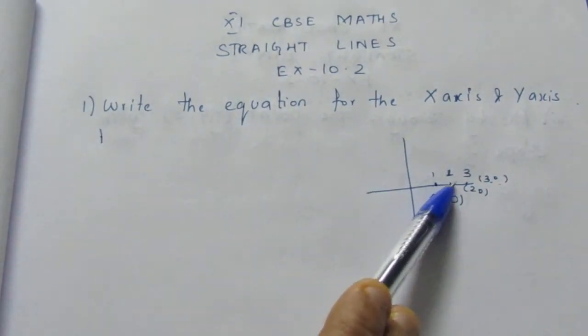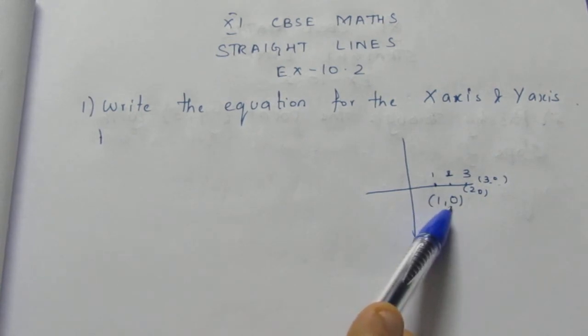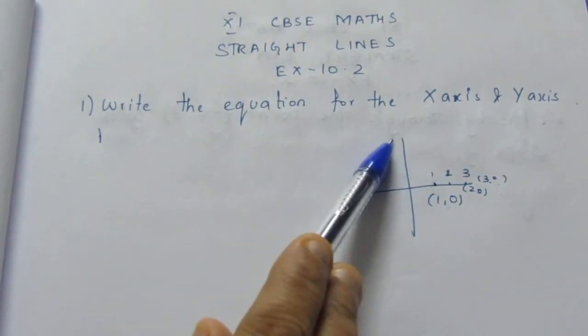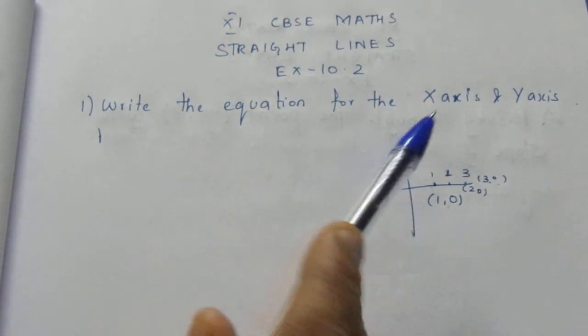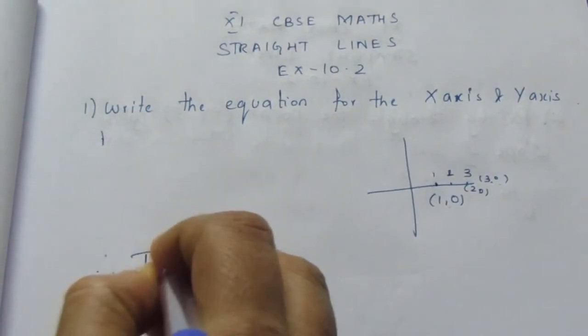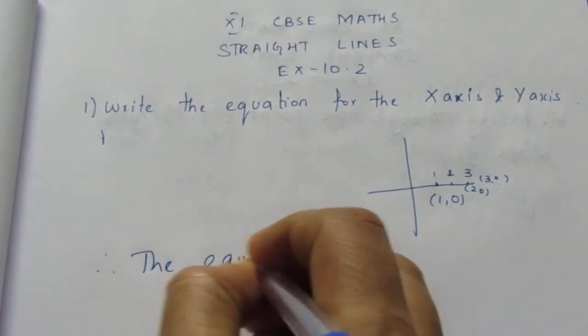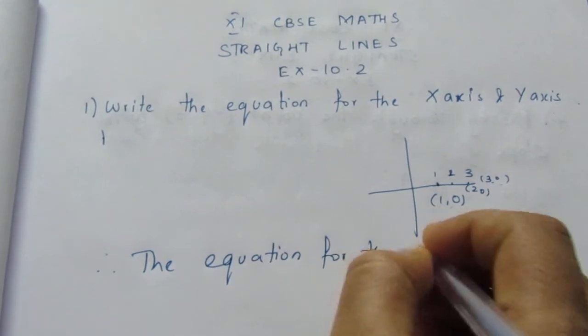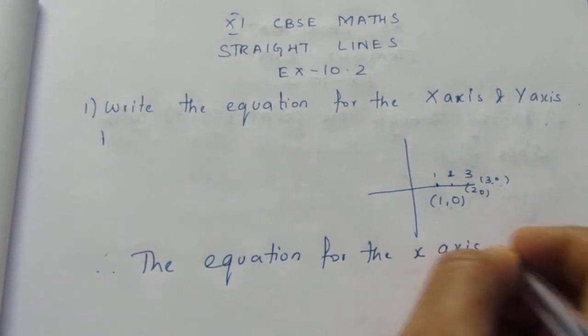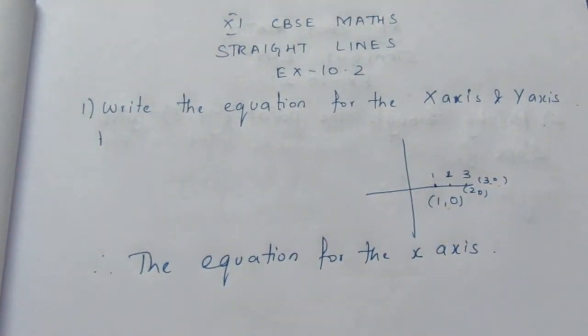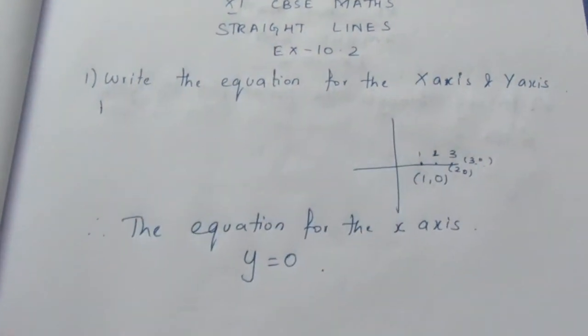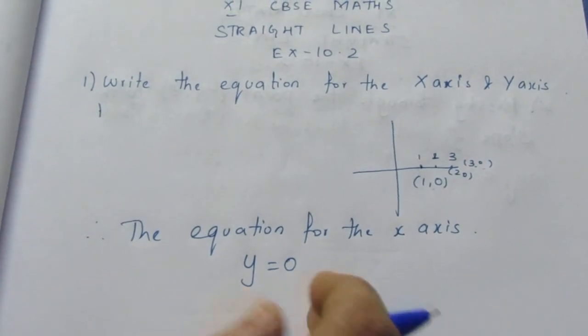Now, we know that on the x-axis, the value of y is 0. Same way, on the y-axis, the value of x will be 0. Therefore, we can directly write the equation for the x-axis: we know one condition that the y value will be 0 on the x-axis, so we can directly write y = 0 is the equation for the x-axis.